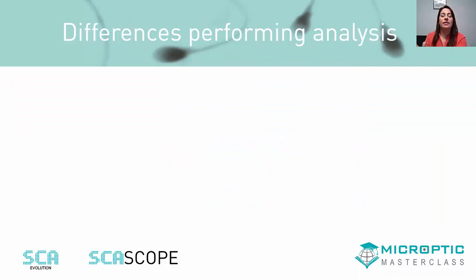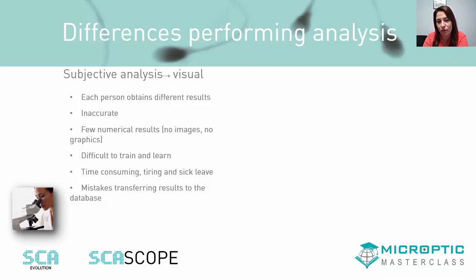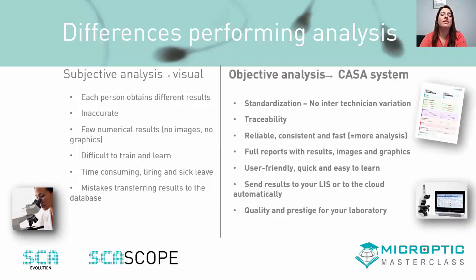We will see the differences between subjective or manual analysis and objective analysis with the CASA system. Regarding manual analysis, each person or technician can see results differently — it is very subjective. There is a lack of precision in results. Manual analysis is also harder to teach, and there are no numerical graphics or images to learn from. You spend more time and this can cause visual fatigue. Errors may occur when transferring results manually to the system. The idea of using a CASA system is to obtain objective analysis — less tiring, time-saving, and to prevent false results. A CASA system aims to avoid subjectivity.